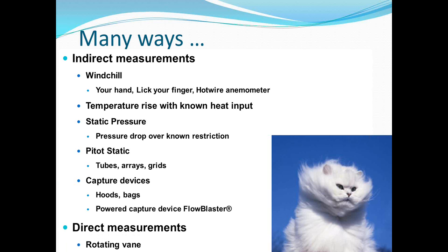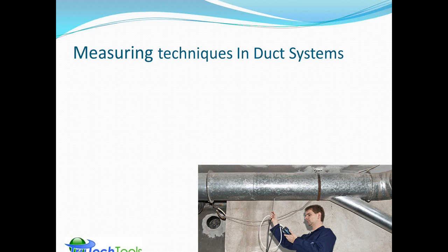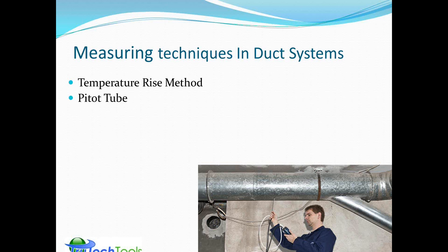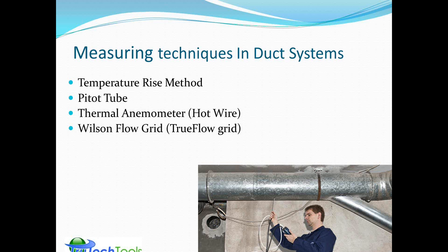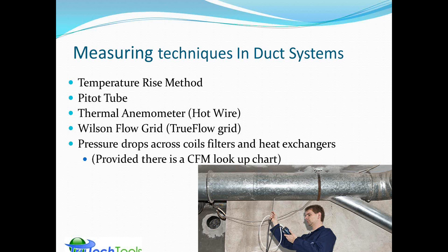Direct measurements include the rotating vane, which — like a fan — measures a constant CFM of air independent of air density. For in-duct measurements, the available methods include the temperature rise method, pitot tube, thermal or hot wire anemometer, the Wilson or True Flow grid (an Energy Conservatory product), and pressure drops — each requiring CFM lookup charts specific to the equipment.